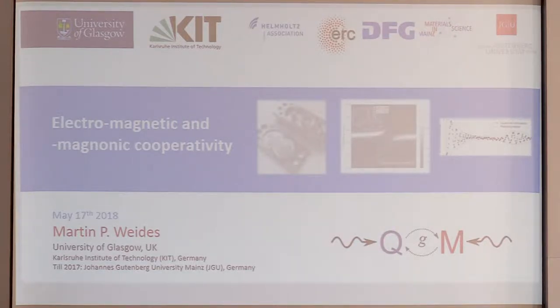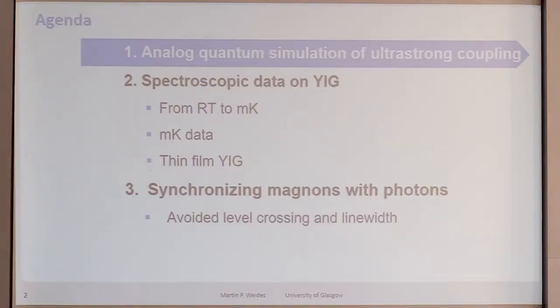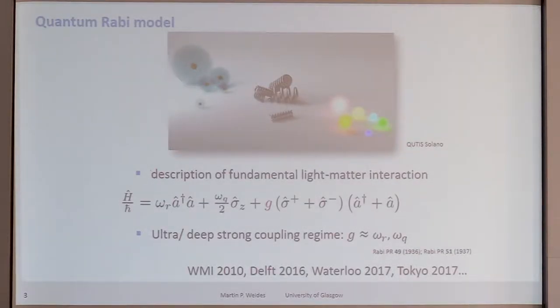The work is also collaborative or cooperative, so it has been done here locally in Mainz, in the chair of Matthias Kläui, and also at KIT. Now since January I moved, or am about to move to Glasgow. I don't have a lab there yet, but the data I'm going to present has been taken in Mainz and in Karlsruhe. First I will talk about an experiment on analog quantum simulation, where we simulated ultra-strong coupling between a spin and a cavity, or light and matter.